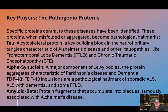Tau is characteristic of Alzheimer's disease and other tauopathies like frontotemporal lobe dementia (FTLD) and chronic traumatic encephalopathy (CTE). Alpha-synuclein is a major component of Lewy bodies — the protein aggregates characteristic of Parkinson's disease and dementia. TDP-43 inclusions are a pathological hallmark of sporadic ALS, ALS with dementia, and some frontotemporal lobe dementia. Amyloid beta — protein fragments that accumulate into plaques — is famously associated with Alzheimer's disease.